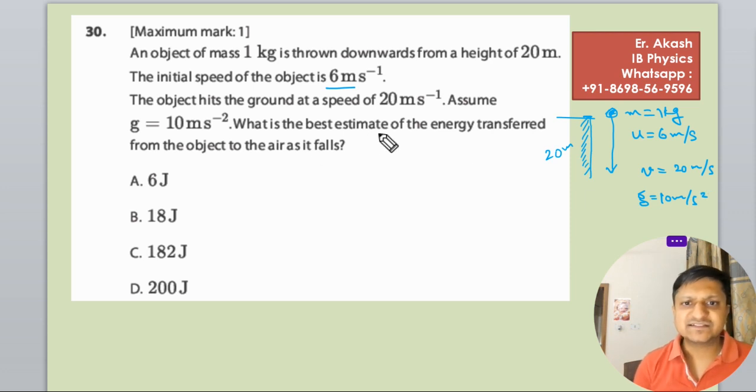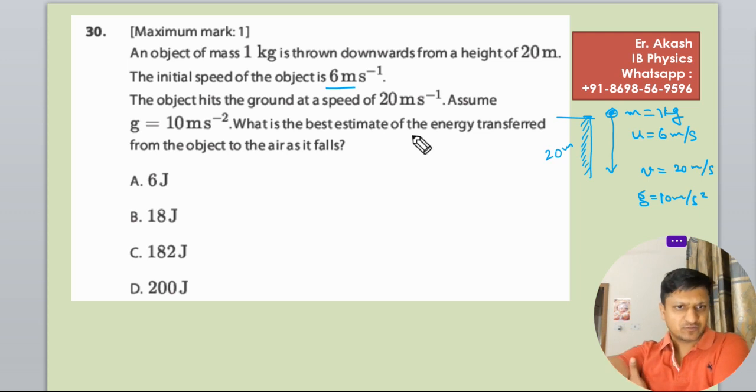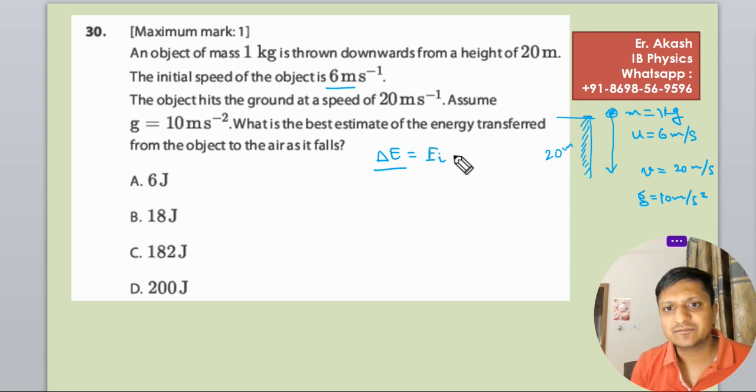What is the best estimate of the energy transferred from the object to the air as it falls? Basically in this question we have to find the change in the energy. Change in the energy will be the energy at initial level minus the final level.